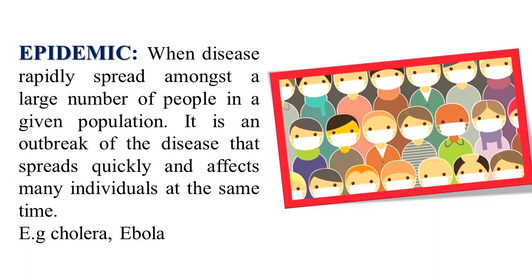Epidemic refers to when a disease rapidly spreads amongst a large number of people in a given population. It is an outbreak of disease that spreads quickly and affects many individuals at the same time. For example, cholera and Ebola.